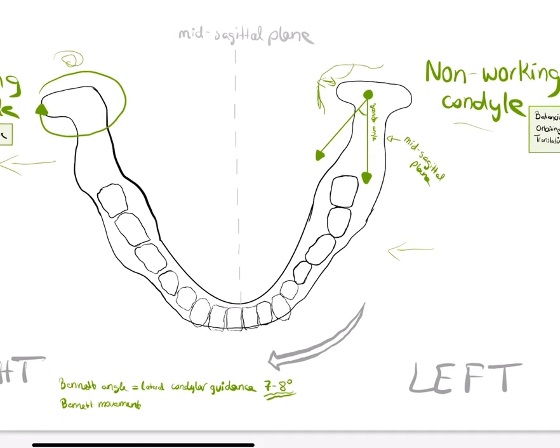Second, we have the progressive side shift. This occurs after the initial side shift, and the condyle moves downwards and forwards. Altogether, it is called immediate side shift.